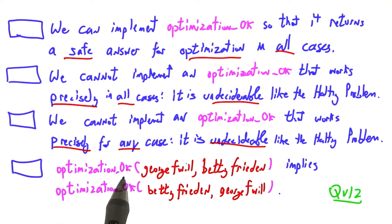And then down here, optimization_ok of George F. Will, Betty Friedan, implies optimization_ok of Betty Friedan, George F. Will. Check all that are true.